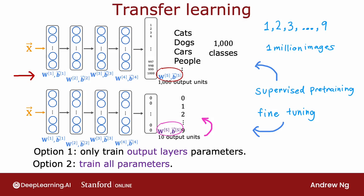And so if you have a small dataset, even tens or hundreds or thousands or just tens of thousands of images of the handwritten digits, being able to learn from this million images of a not quite related task can actually help your learning algorithm's performance a lot.